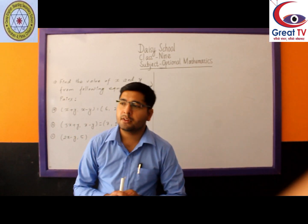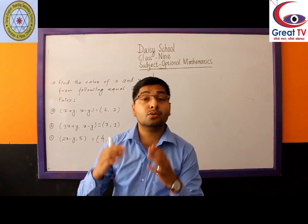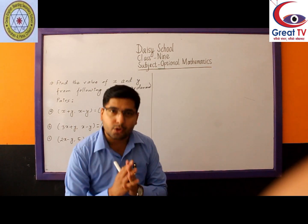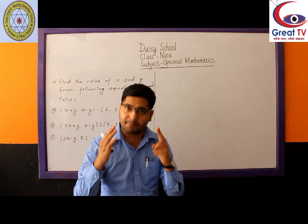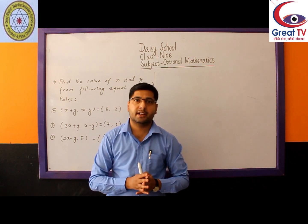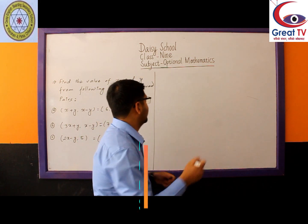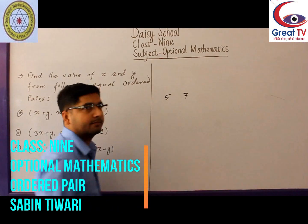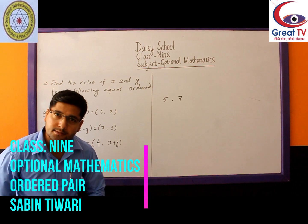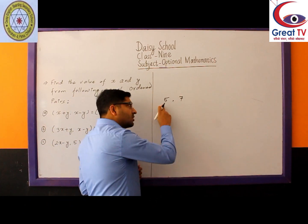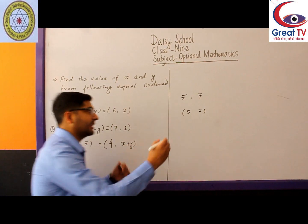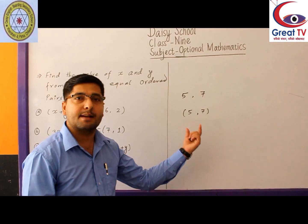If we write any two mathematical objects or any two numbers inside small brackets separated by a comma, it is known as an ordered pair. For example, we have two numbers, 5 and 7. Writing them inside small brackets with a comma gives us the ordered pair (5, 7). In this ordered pair, 5 lies before the comma and 7 lies after the comma.